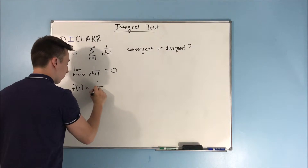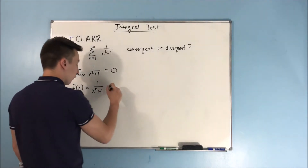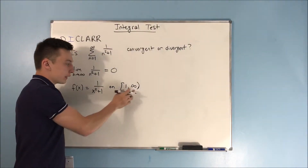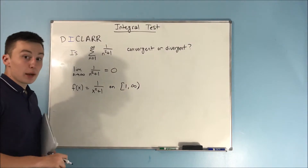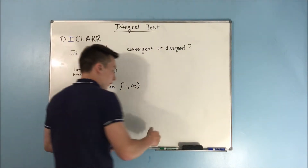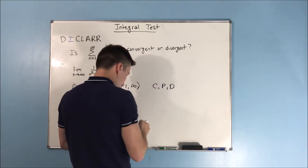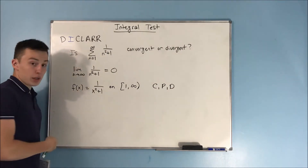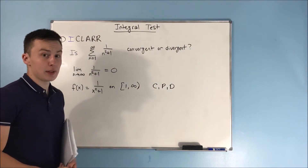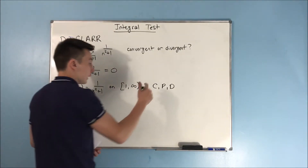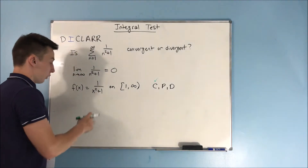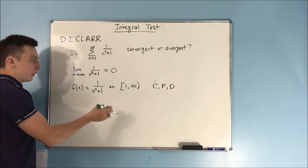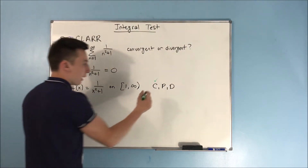Now we need to look at the function we can compare it to, which is f(x) = 1/(x²+1), on the interval one to infinity. Is this function continuous, positive, and decreasing? Let's check CPD. Is it continuous? The denominator would only cause a problem if it were zero, but x² and 1 are two positive numbers being added together, so there are no discontinuities — it is continuous. Is it positive? The denominator is always positive because x is squared and we're inputting positive numbers, so everything is positive.